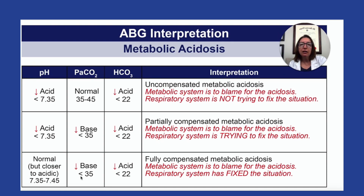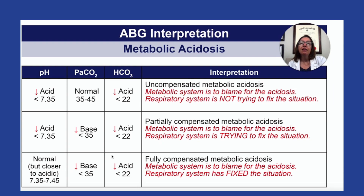And sure enough, if we look at PaCO2, we'll see that it's basic — it is under 35. And if we look at HCO3, it is acidic, it is under 22. So we can deduce that we had metabolic acidosis that was fully compensated by the respiratory system because our pH is in the normal range. The metabolic system caused the acidosis, and the respiratory system came in and fixed the situation, getting that pH in the normal range.